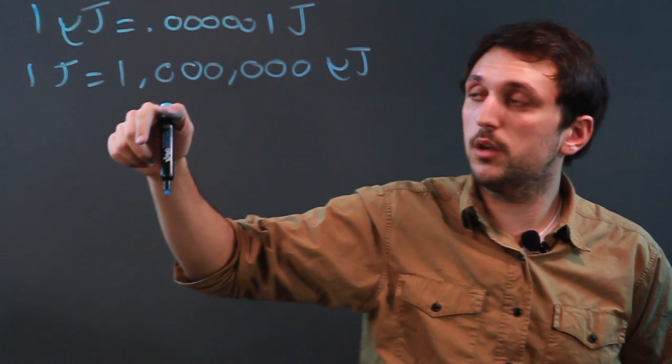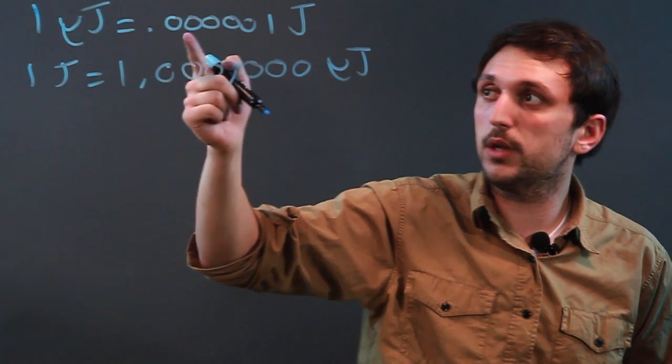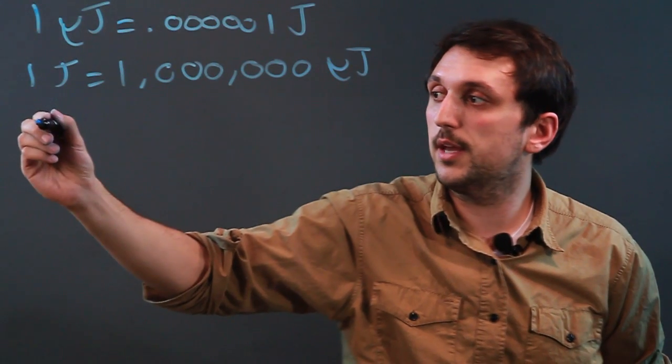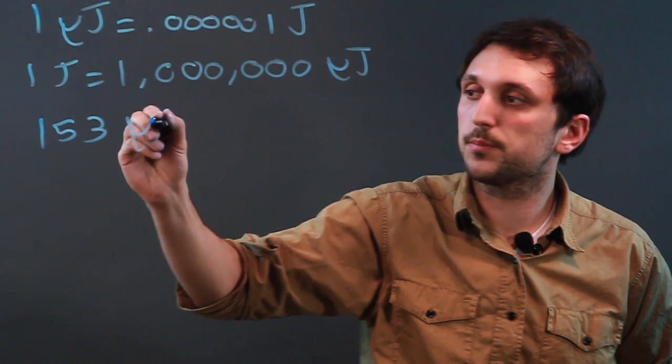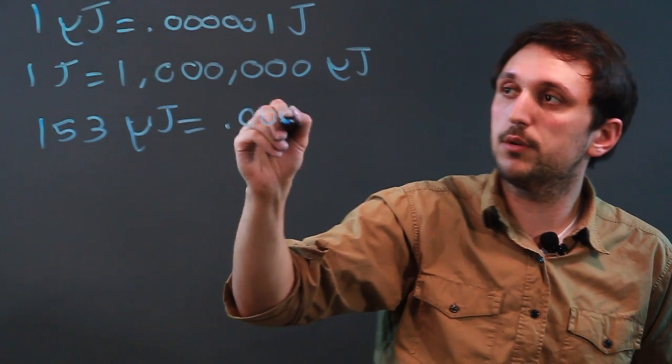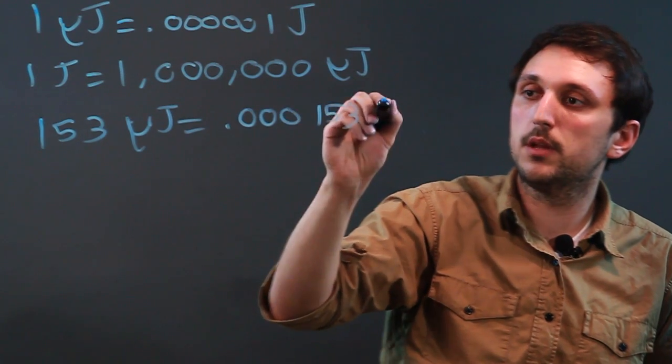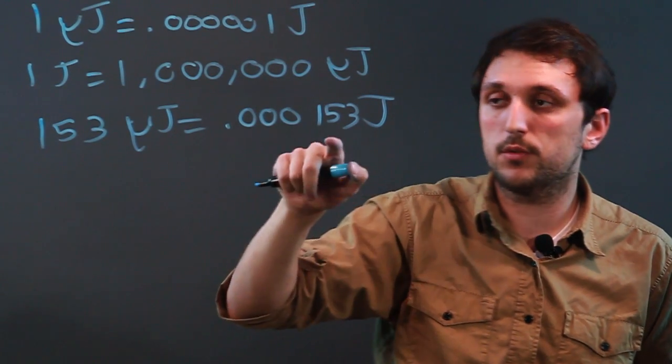So, if we want to convert a number of them, let's take a look. If one microjoule equals .00001 joule, then 153 microjoules equals .000153 joules, because we're going over two more decimals.